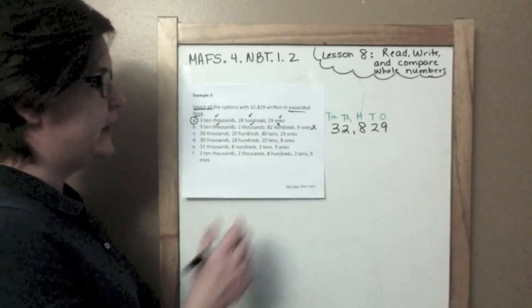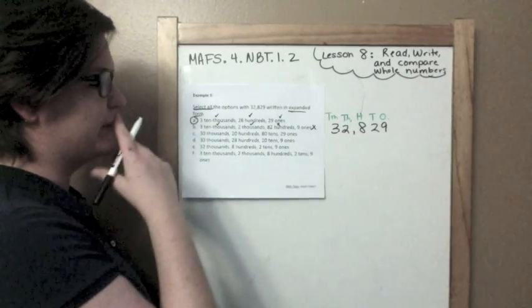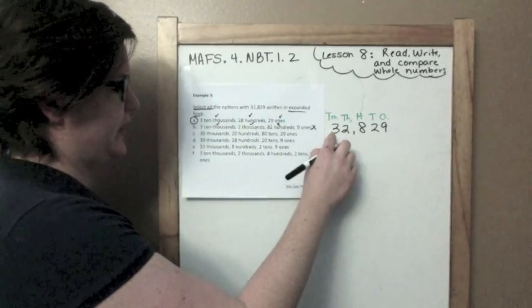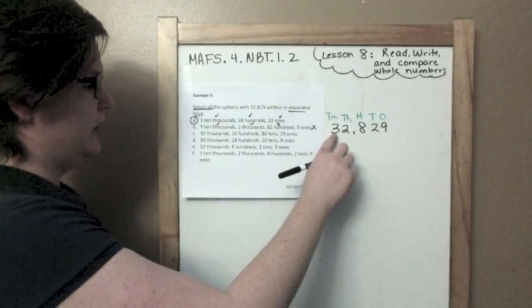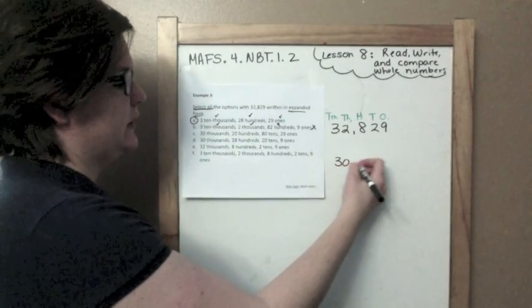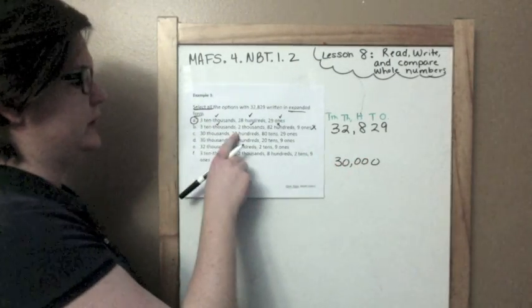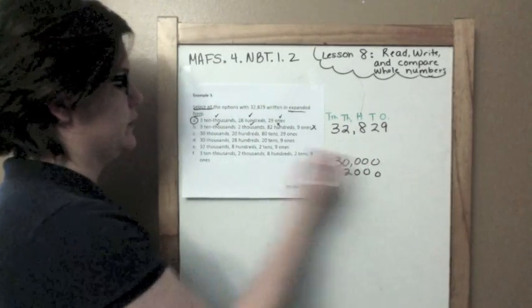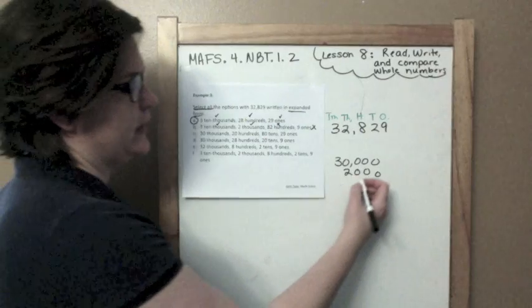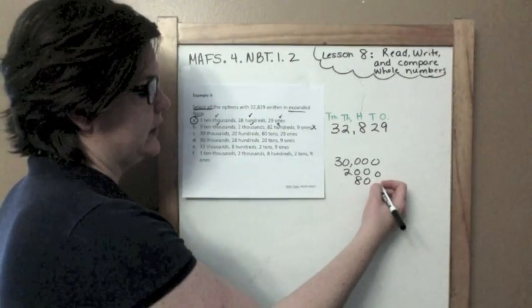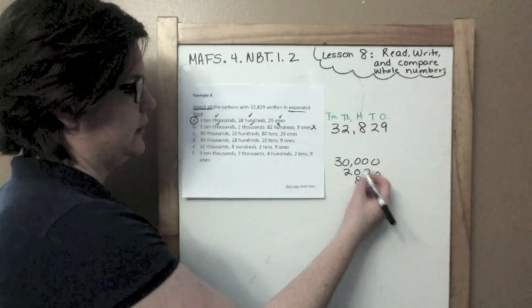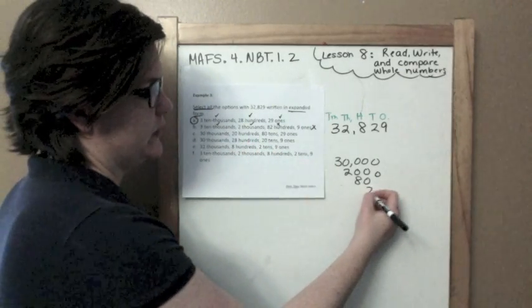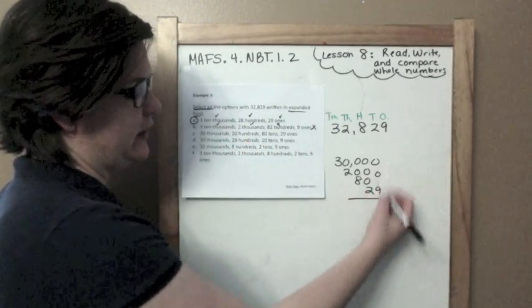Okay, let's look at C. It says 30 thousands. Well, this says 32 thousands, but I'm going to try something real quick. So, it technically is, this is the 30 thousands place. Okay, so, let's write 30 thousand, 20 hundreds, so 20-zero-zero, 80 tens, 80 and the tens place.